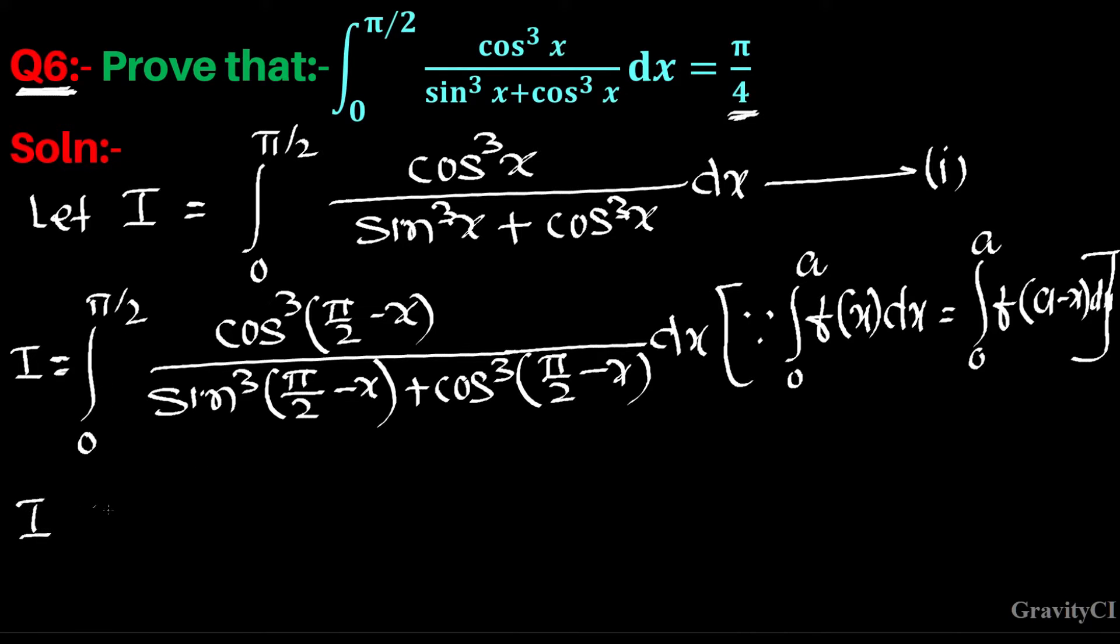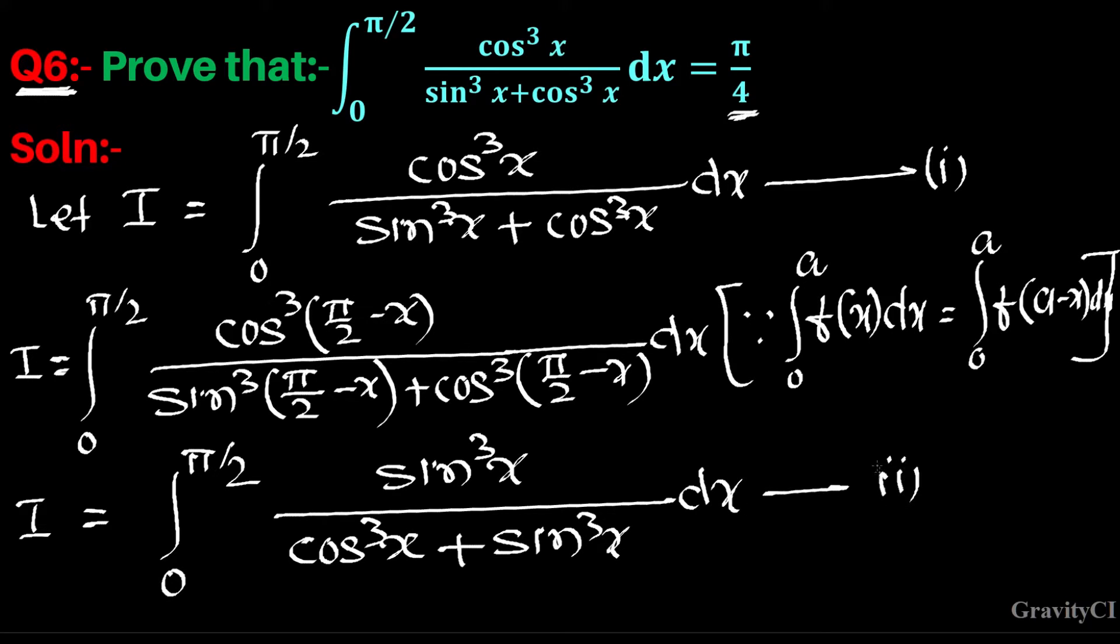So now this is 0 to π/2, cos(90° - x) = sin³x upon cos³x plus sin³x dx. This equation is second, and now we will add two equations.